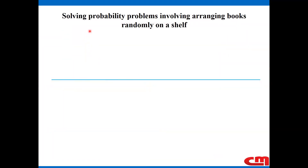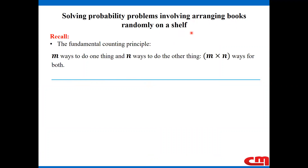We will look at probability problems involving arranging books randomly on a shelf. Let us recall the fundamental counting principle: if there are m ways to do one thing and n ways to do another thing, then there are m times n ways to do both.